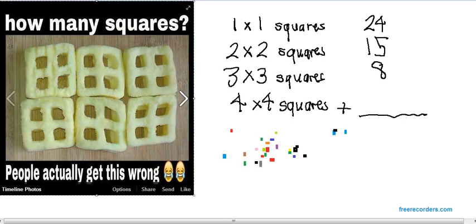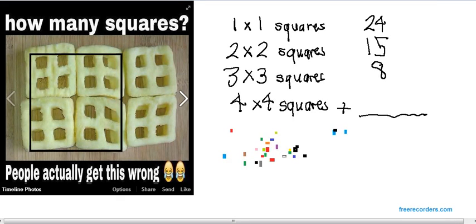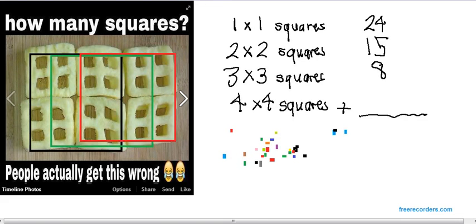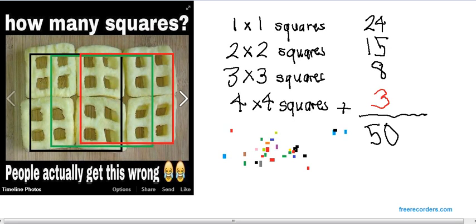So finally, let's count the 4x4 squares. And here would be one 4x4 square. If we move that one to the right, we would get a second 4x4 square. And if we move that one to the right, we would get our final 4x4 square. So all together, a total of 3 4x4 squares. We add them up. 24 plus 15 is 39. 39 plus 8 is 47. 47 plus 3 is 50, which is the answer to the problem.